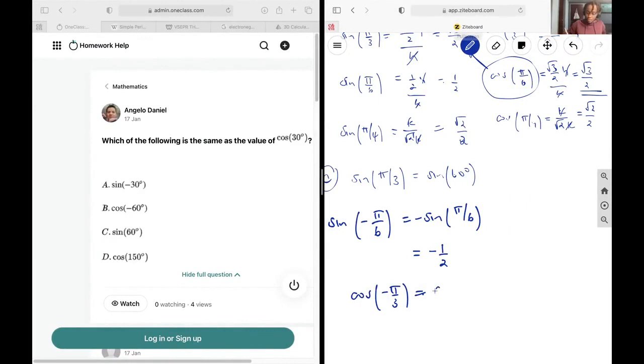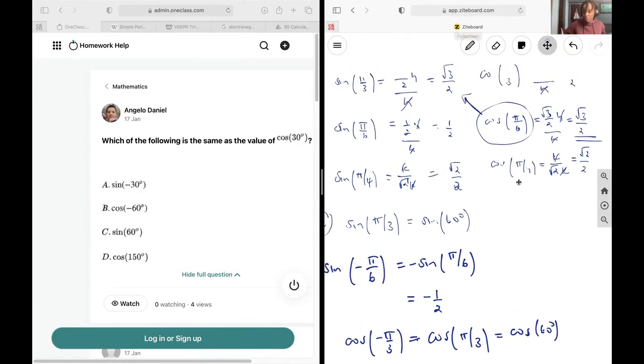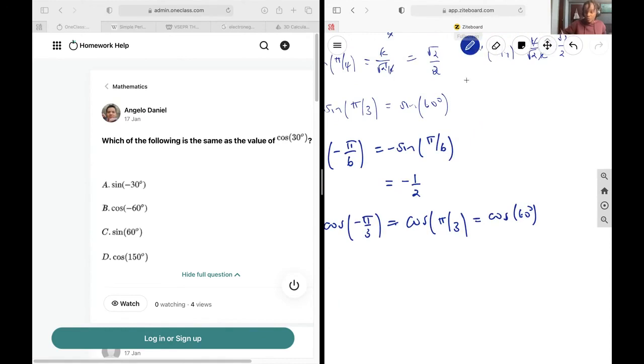So cos of negative pi over 3 is going to be equal to cos pi over 3, and that is going to be cos 60 degrees. We found that cos pi over 3 is going to give us 1 over 2, so this is just 1 over 2. That's going to be b.